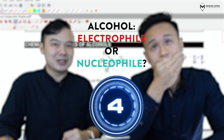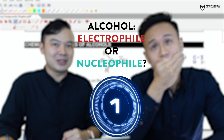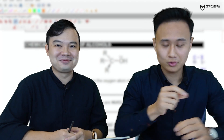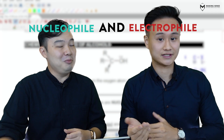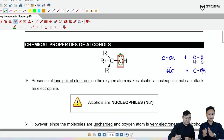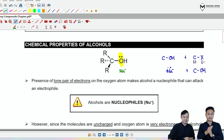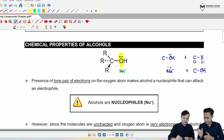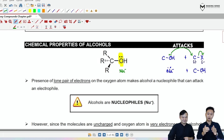Before moving into the reactions, I think we need to ask a very important fundamental question: is the alcohol an electrophile or a nucleophile? Mr. Tim, would you like to enlighten us? Alcohols can behave as both nucleophiles and electrophiles. If we focus on the hydroxyl functional group, the oxygen has a lone pair, making it electron-rich. Hence the oxygen is nucleophilic. If I put a haloalkane — an electrophile — next to it, the oxygen uses its lone pair to attack the carbon and break off the C-X bond. So the alcohol is clearly behaving as a nucleophile here.